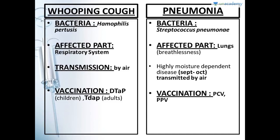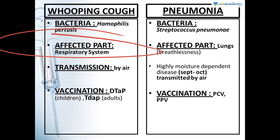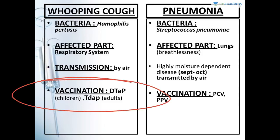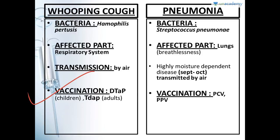Whooping cough — the bacteria is Haemophilus pertussis. It affects the respiratory system, which is why the sound of cough is like a dog bark. The transmission is by air. The vaccination is DTAP in children and TDAP in adults. You have to remember both of them because SSC may ask you both.